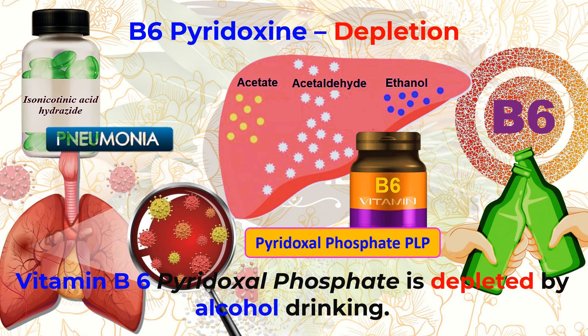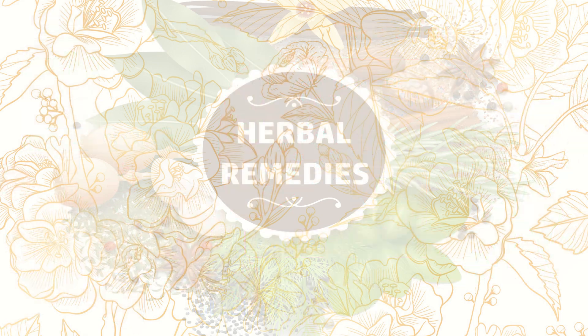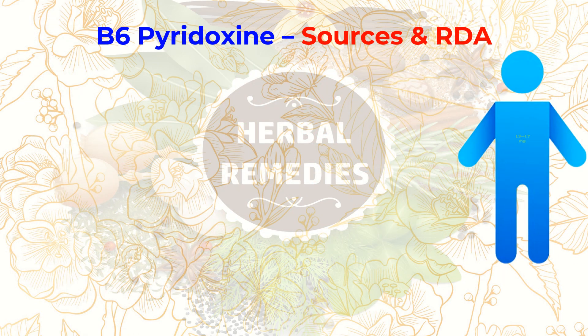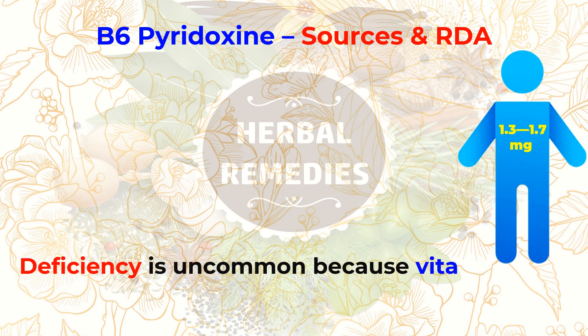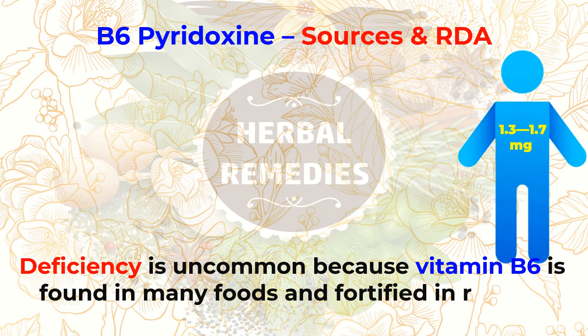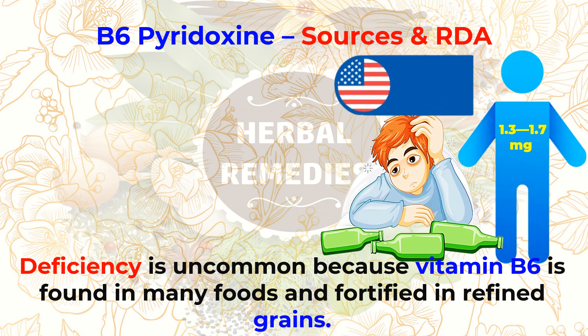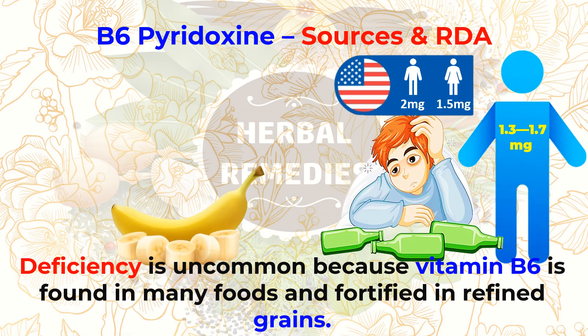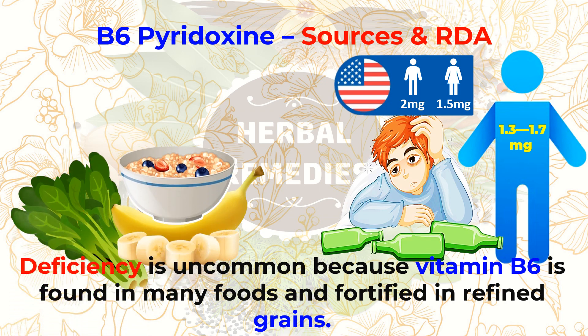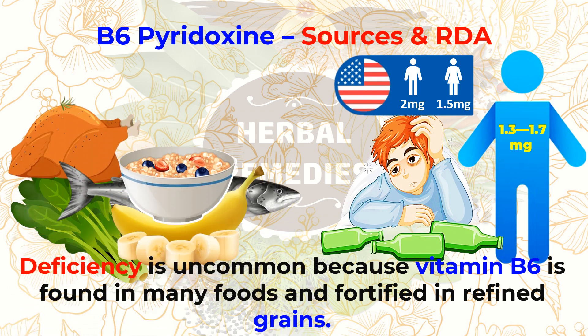Adults need about 1.3 to 1.7 milligrams of vitamin B6 to meet the RDA. Severe deficiency is uncommon because vitamin B6 is found in many foods and is fortified in refined grains. Alcoholics are at risk of deficiency, and increased protein intake increases the need for B6. Dietary intake in the United States averages about 2 milligrams per day for men and 1.5 milligrams per day for women. Bananas, fortified cereal, spinach, chicken, salmon, and potatoes are high in vitamin B6.